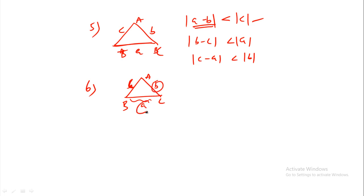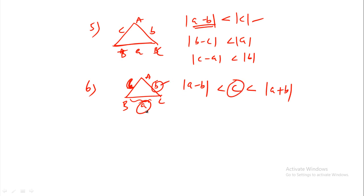Given side values a and b, the range of the third side c is: modulus of a minus b less than c less than a plus b. So the third side range is from |a minus b| to |a plus b|.